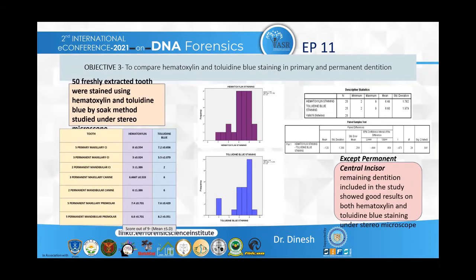In objective three, hematoxylin and toluidine blue staining were compared across primary and permanent dentition. Fifty freshly extracted teeth were stained by soak method and studied under stereomicroscope, including five primary maxillary central incisors, three permanent maxillary central incisors, two permanent mandibular central incisors, three permanent maxillary canines, two permanent mandibular canines, five permanent maxillary premolars, and five permanent mandibular premolars. Maxillary central incisors were poor in recording ameloglyphics patterns, while deciduous teeth showed superior stain uptake and pattern results.